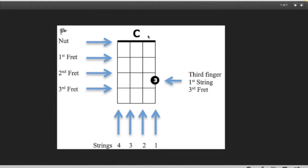In order to play a C chord, you need to put your third finger on the first string, which is this string, third fret. But whenever you see dots on a chord chart with a number in it, the number represents the finger.